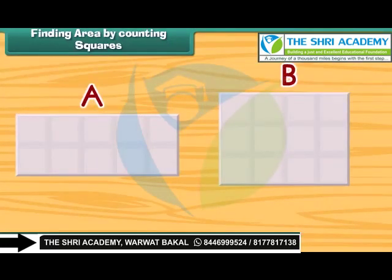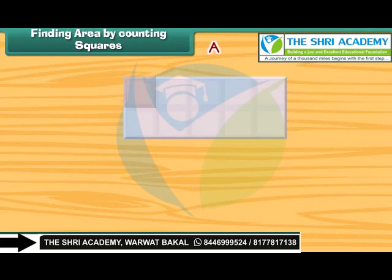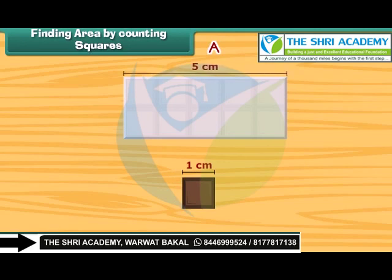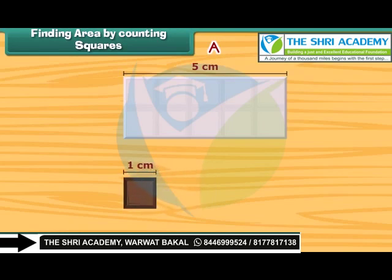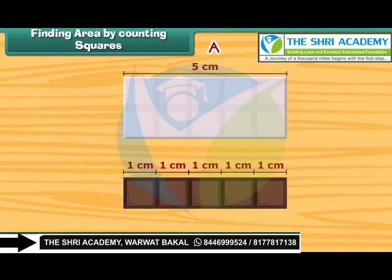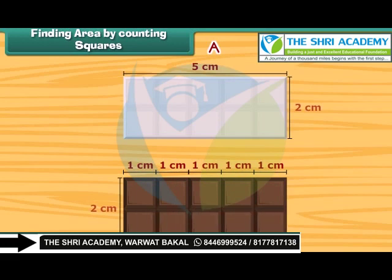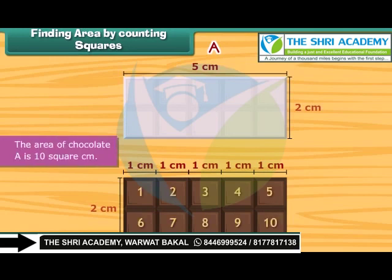We have these two chocolates. Let us find out which one is bigger and which one is smaller. We will take the help of one square piece of chocolate of side one centimeter. The length of chocolate A is five centimeters, so five squares can be arranged along its length. The width is two centimeters, so two squares can be arranged along its width. In total, ten squares can be arranged on it. So, the area of chocolate A is ten square centimeters.